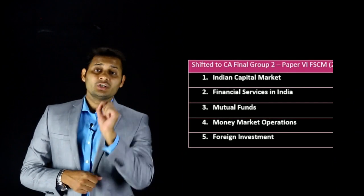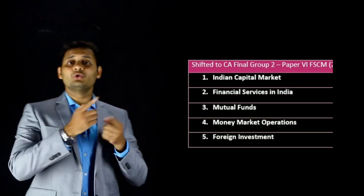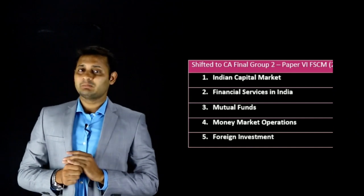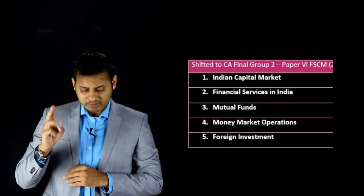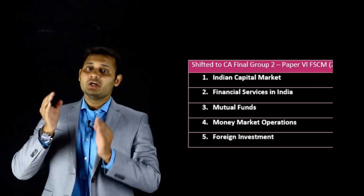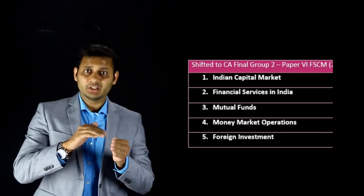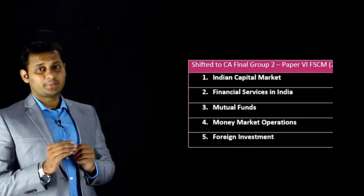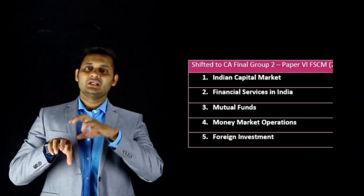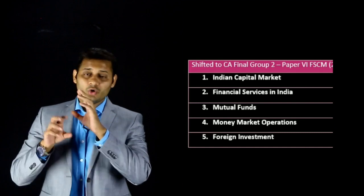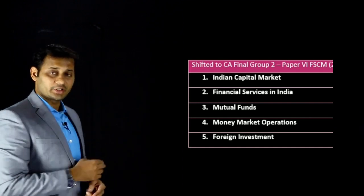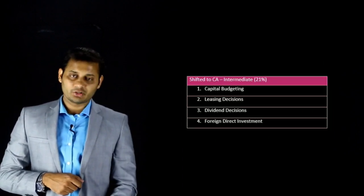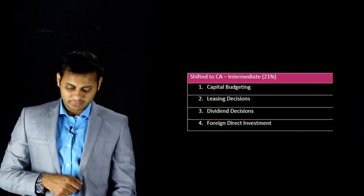Now let's discuss which SFM chapters have been transferred to Group 2 CA Final — the FSCM paper (Financial Services and Capital Market). These are: Indian Capital Market theoretical part (fully transferred), Financial Services in India, Mutual Funds (essentially fully transferred since what remains in new SFM is also present in Group 2 plus extra content), Money Market Operations, and Foreign Investment theoretical part. These five topics from old SFM have been transferred to new syllabus Group 2. They will not be found in new SFM.